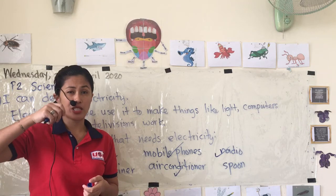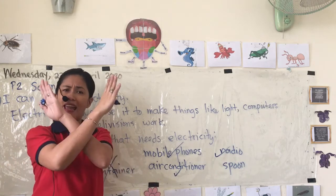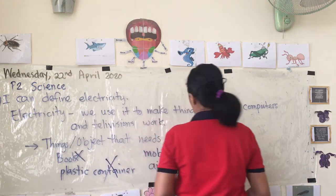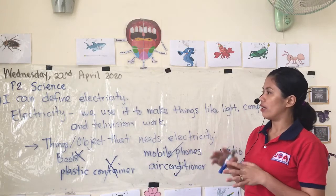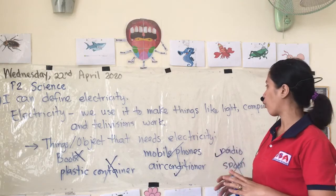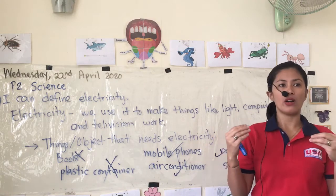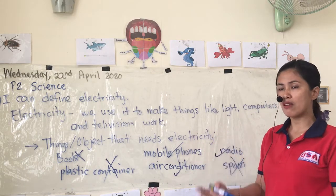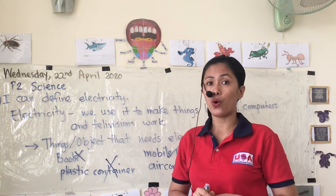How about a spoon — the spoon we use to eat? Do we need electricity for it to work? Definitely not, so an X. So again, we use electricity for things like light bulbs, lampshades, phones, TVs, and computers to work.